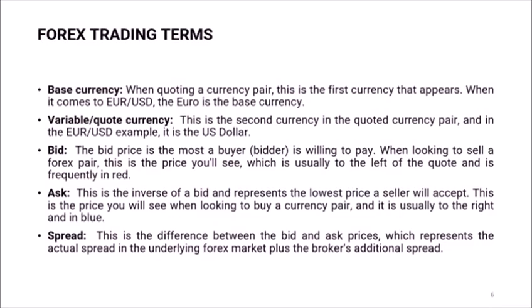BID — what does BID mean? The bid price is the most a buyer or bidder is willing to pay. When looking to sell a Forex pair, this is the price you see, which is usually to the left of the quote and is frequently in red. The ASK is the inverse of a bid and represents the lowest price a seller will accept. This is the price you will see when looking to buy a currency pair, and it's usually to the right and it's in blue.